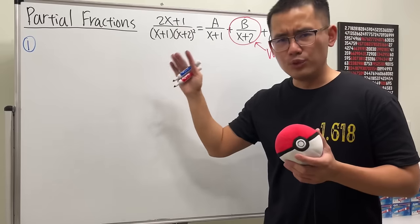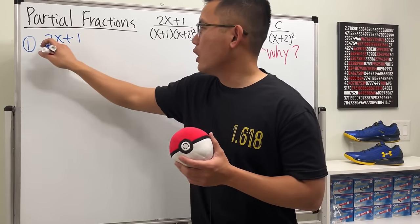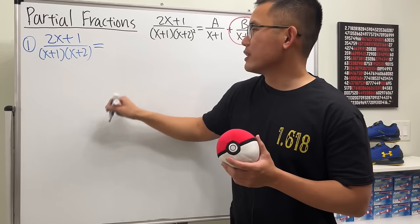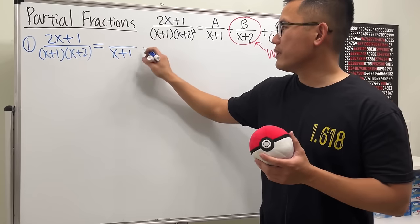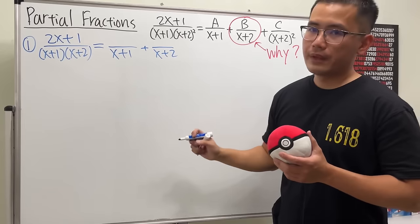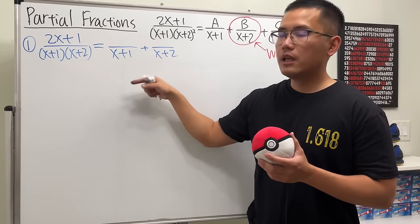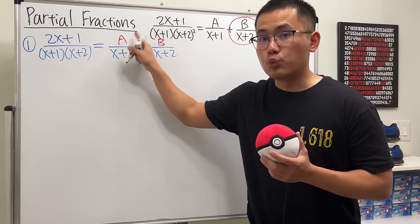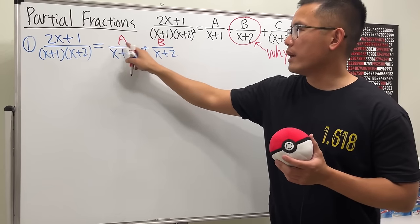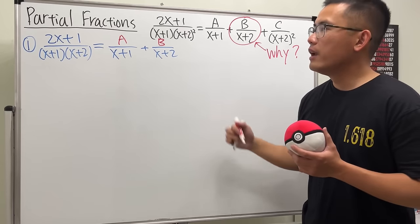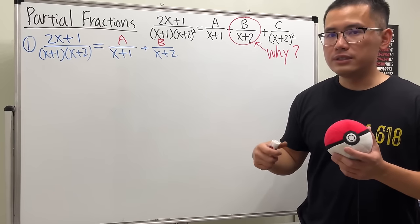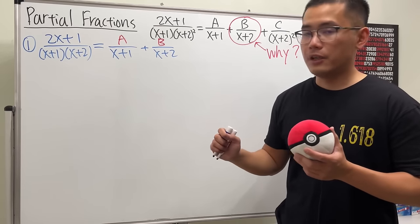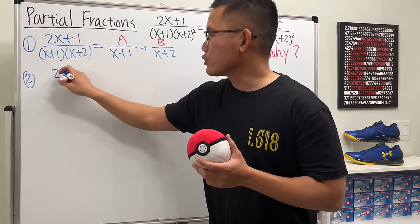Let's use the numerator 2x+1. If we take a look at (2x+1) over (x+1)(x+2), this is everybody's favorite because we can just break them apart: (x+1) for the first fraction and (x+2) for the second. Notice they are both linear, meaning degree 1, so the top will be just constants — because you always want the degree on top to be one less than the degree on the bottom. Then we can find A and B using the cover-up method.